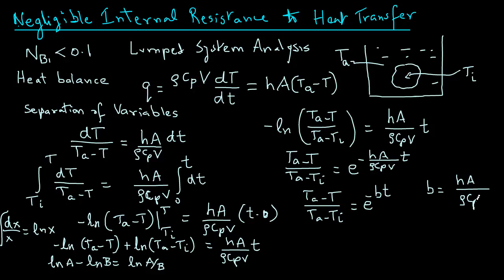So we have obtained a solution for the case of negligible internal resistance — when the Biot number is less than 0.1 — expressed as the temperature ratio (Ta minus T) over (Ta minus Ti) equals e raised to the power of minus B times t.